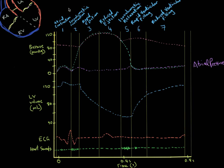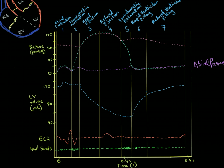Let's talk about atrial pressure — that's this purple line we trace. Starting in phase one, atrial contraction: the left atrium contracts, so the pressure increases up to about here, and then the atrium starts to relax, so the muscle relaxes and pressure decreases.